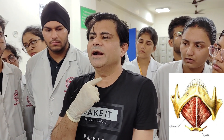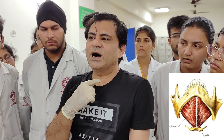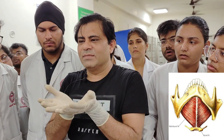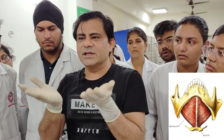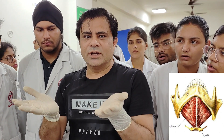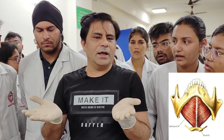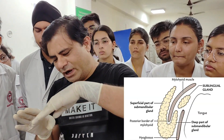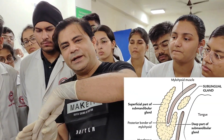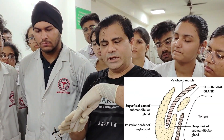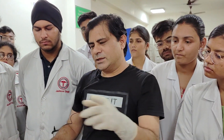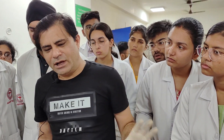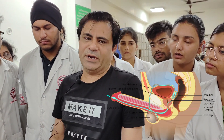The muscle that indents the J in the submandibular salivary gland actually forms the diaphragm of the jaw in the submandibular region. From the hyoid bone to the mandible, there is a diaphragm-like muscle, and that muscle is the mylohyoid. The mylohyoid forms the indent there.